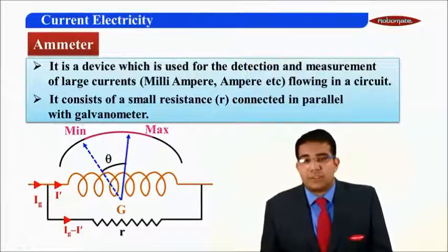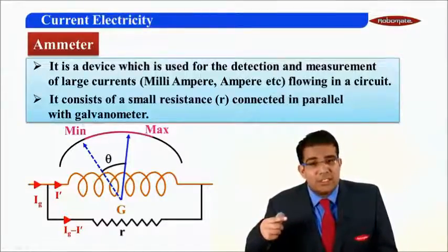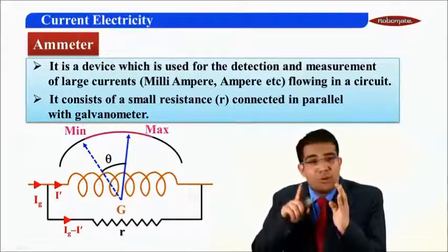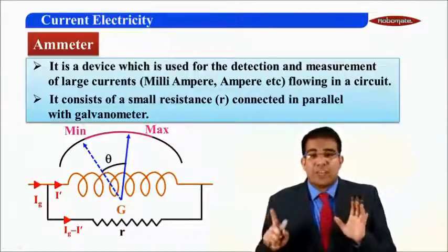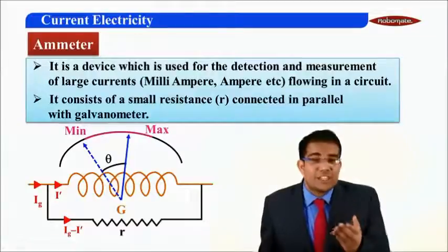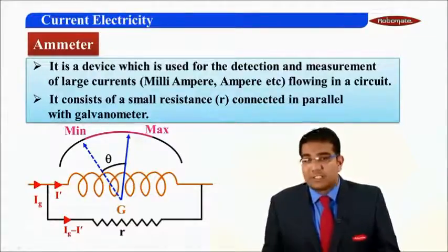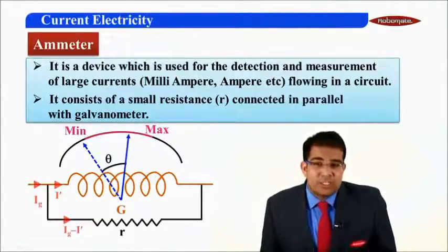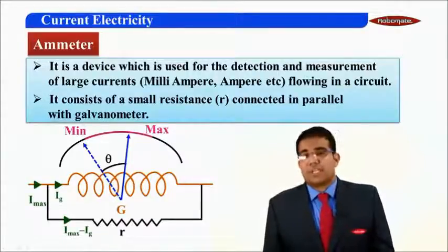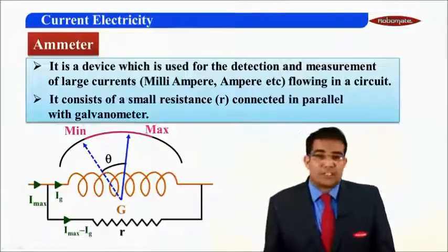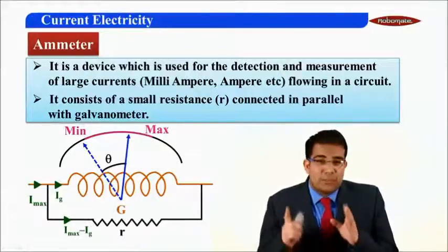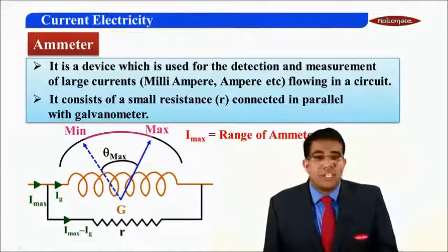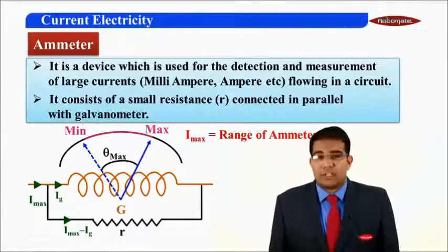Since I-dash is smaller than Ig, the deflection of the needle decreases. The same Ig is now measured at a lesser deflection, meaning I have more capability to pass current — the range of measuring current increases. I can keep increasing the current until the current entering the coil reaches Ig again. The current outside at that point is Imax, which is the maximum ability of the ammeter, also called the range of the ammeter.